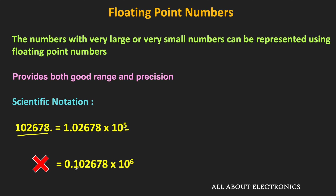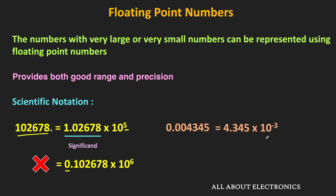If the same number is represented differently, that is not scientific notation, because the digit before the decimal point is 0. In scientific notation, that digit must be non-zero. Similarly, for another number, in scientific notation the decimal point is shifted to the right by 3 decimal places, and that is why in the exponential term we have 10 to the power minus 3. So in scientific notation, we have two components: the significand and the exponent. For example, the significand is 4.345 and the exponent is minus 3. Since we are representing decimal numbers, the base of the exponent is 10.